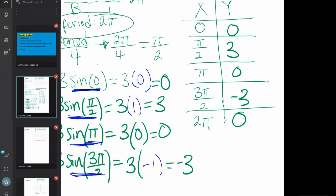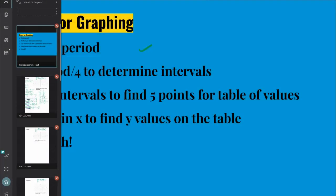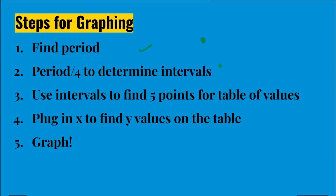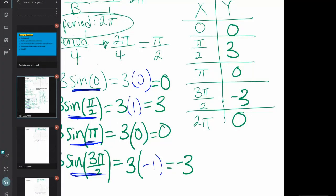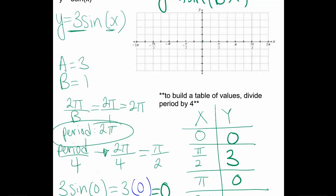So now back to our original steps. We found period. We have divided period over 4 to find our intervals. We've already used the intervals to find our table of values, and we've evaluated. We plugged in x to find y values. Now you are going to graph. So we have our table of values. The first coordinate point will be at 0, 0. Your next one, remember to label your axes. Let me do 1, 2, 3. So this will be positive 3, this will be negative 3 before I continue to graph.